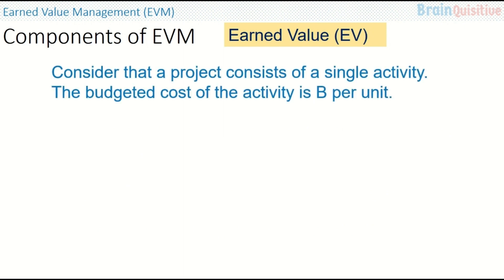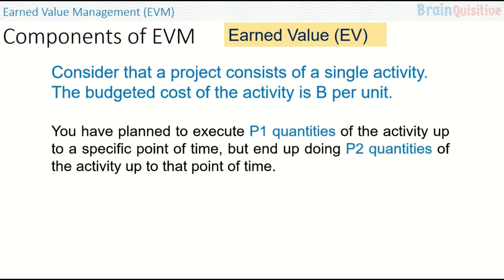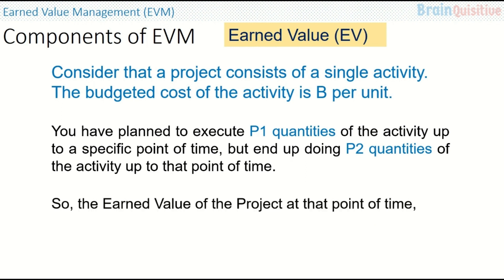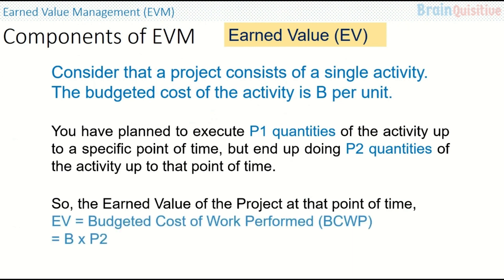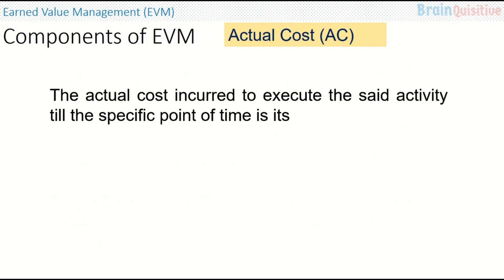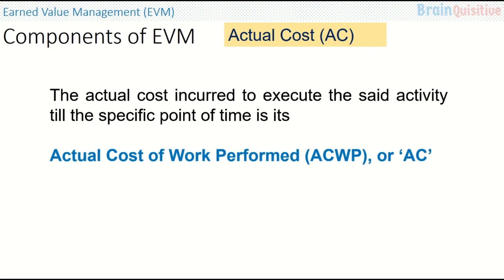Next is earned value. For the same project, if you have planned to execute P1 quantities but end up doing P2 quantities of that activity, then the earned value is EV — the Budgeted Cost of Work Performed, or BCWP — which equals B multiplied by P2, where B is the budgeted cost and P2 is the actual quantity done. Note that B is the budgeted cost and not the actual cost. The actual cost incurred to execute the activity up to that time is called the Actual Cost of Work Performed, or ACWP, also written as AC.